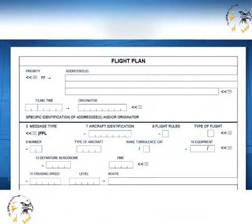A flight plan is the means by which an ATSU is notified of your intentions to fly, and where necessary, to request clearance to fly as a controlled flight.